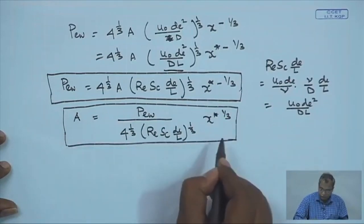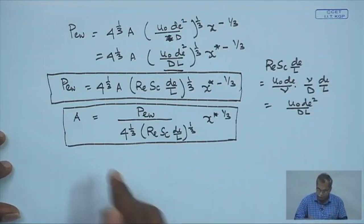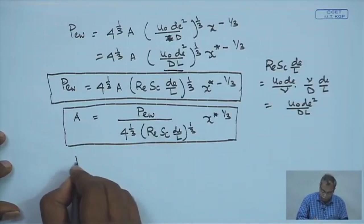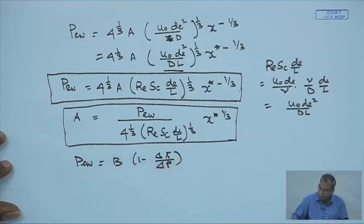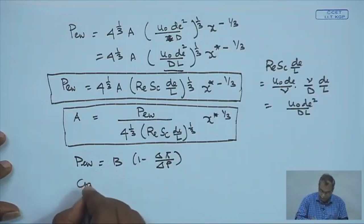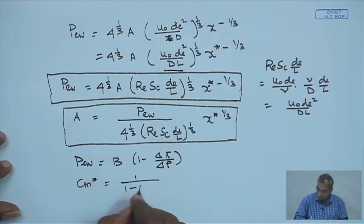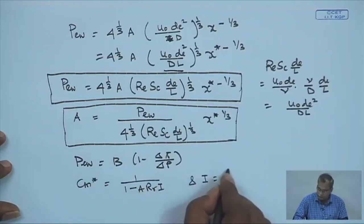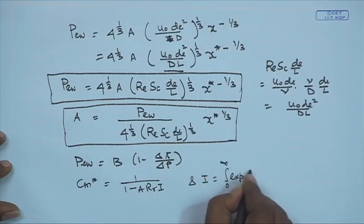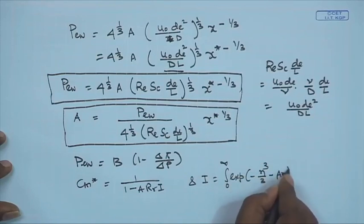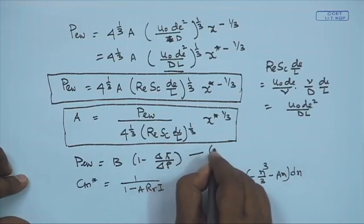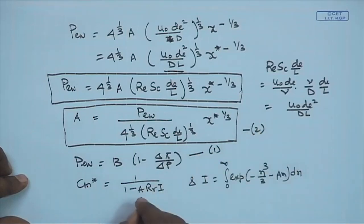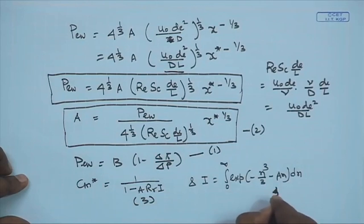Let us write down the different equations we are working with. Equation 1 will be the expression of A. Equation 2: P_w from the osmotic pressure model — B times (1 − Δπ/ΔP). Equation 3: the expression for I. Equation 4: C_m* = 1 over (1 − A·r·r·i), and the expression for I is the integral from 0 to infinity of exp(−η³/3 − A·η) dη.